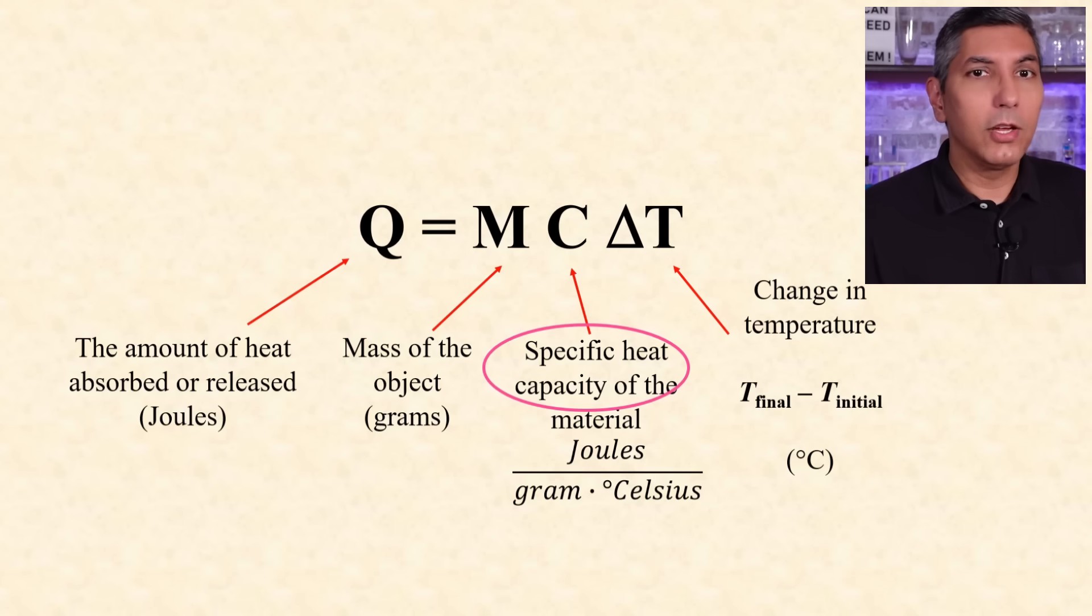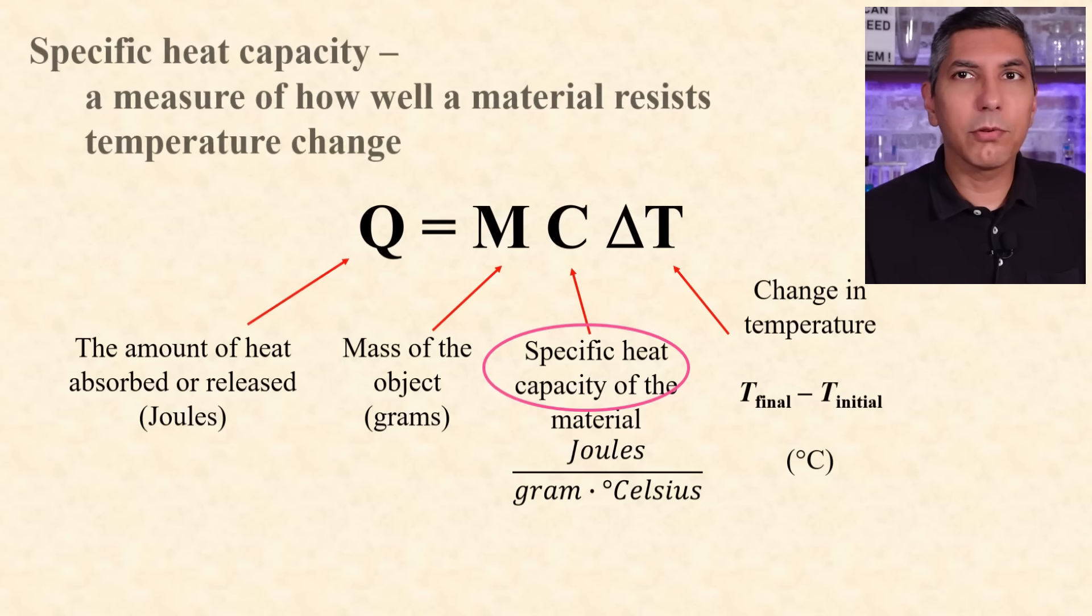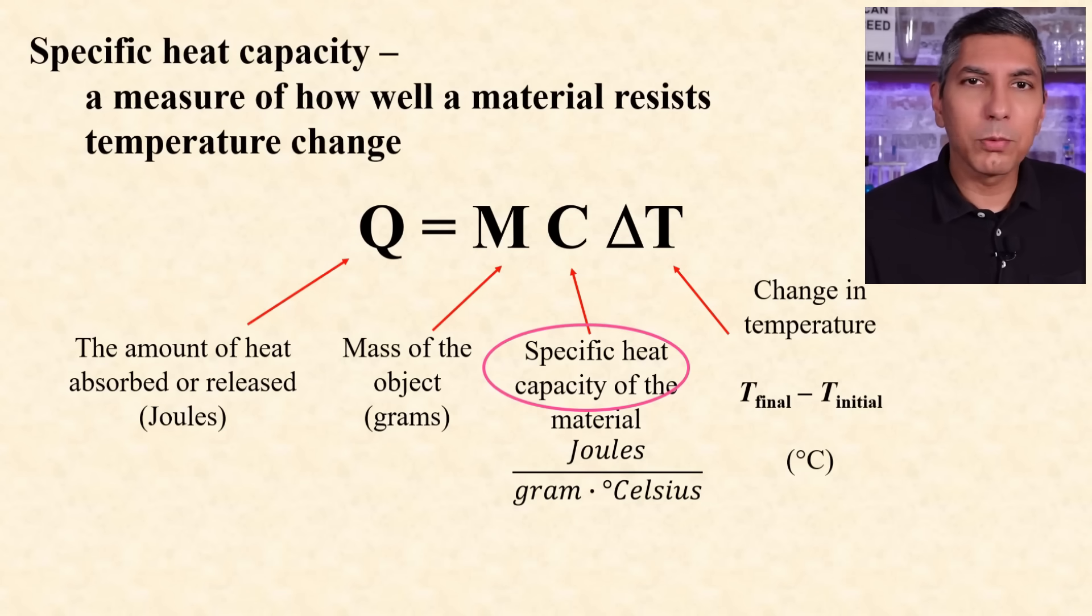Specific heat capacity, usually given in joules per gram degree Celsius, is a measure of how well a material resists temperature change. So some materials have a very low value for C, and adding just a small amount of heat causes a huge jump in temperature. Some materials have a high value for C, and adding heat causes a relatively small jump in temperature. A couple of things to remember about this equation.